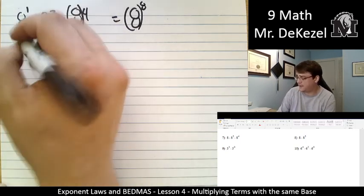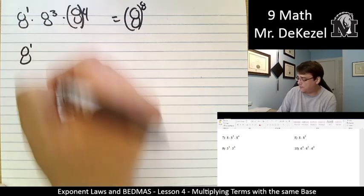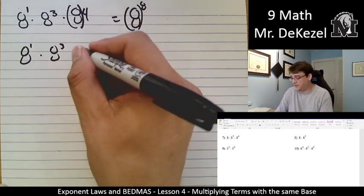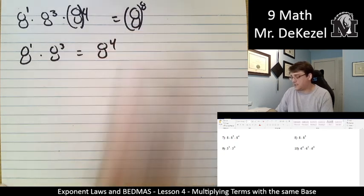The next one, it's also 8's. So we have 8 to the power of 1 times 8 to the power of 3. I already added the 1, just for convenience, which is 8 to the power of 4.